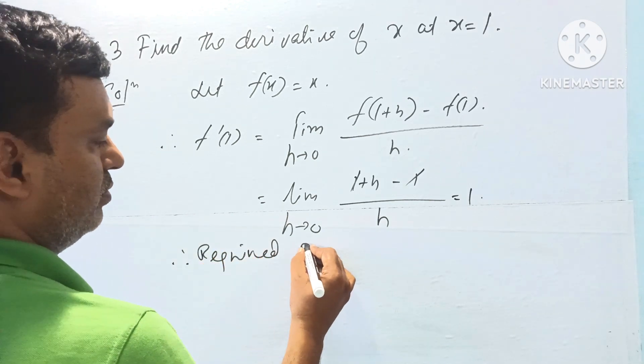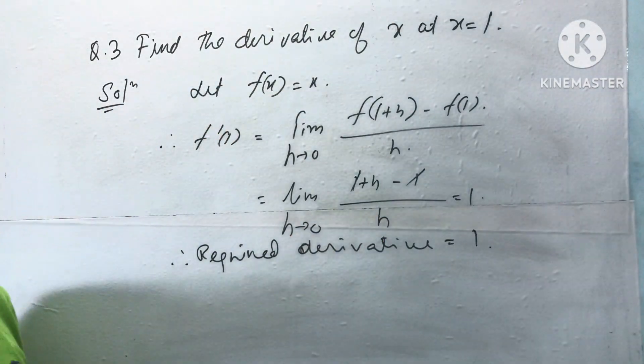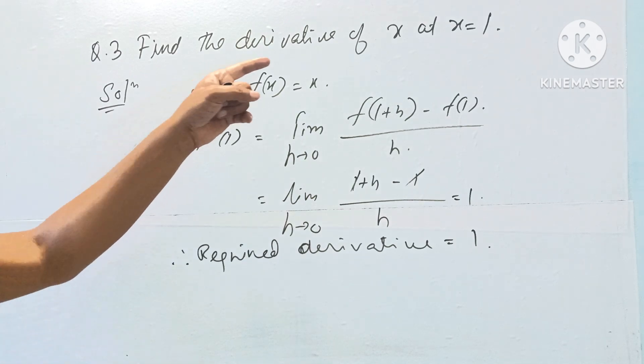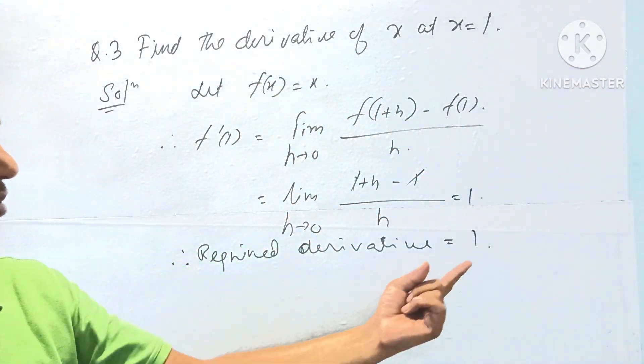The required derivative is equal to 1. So for the function f(x) equal to x at x equal to 1, the derivative is 1.